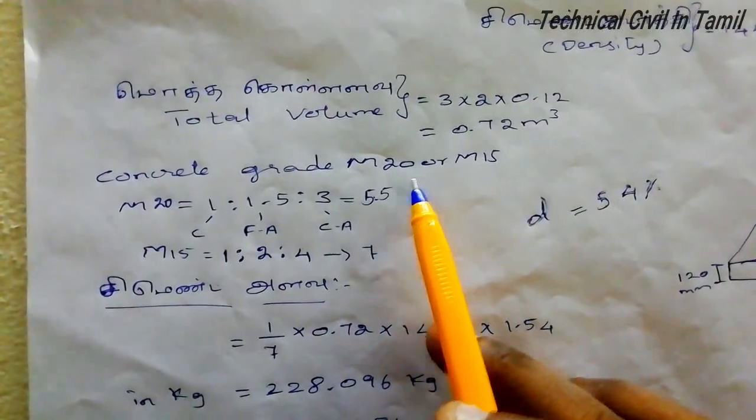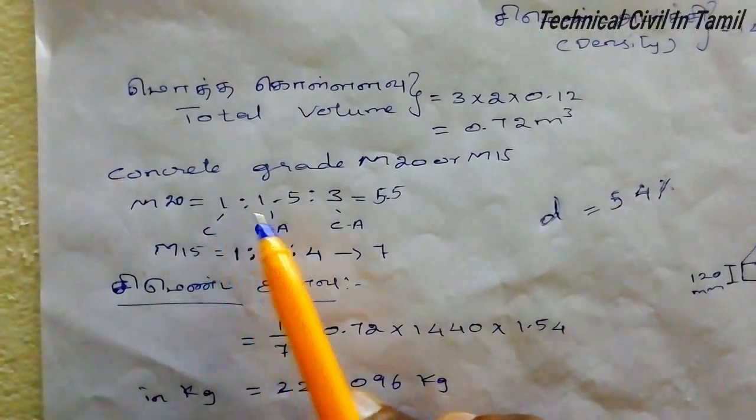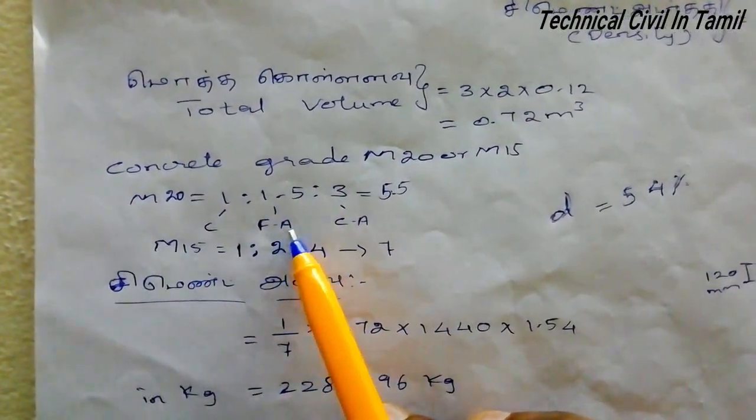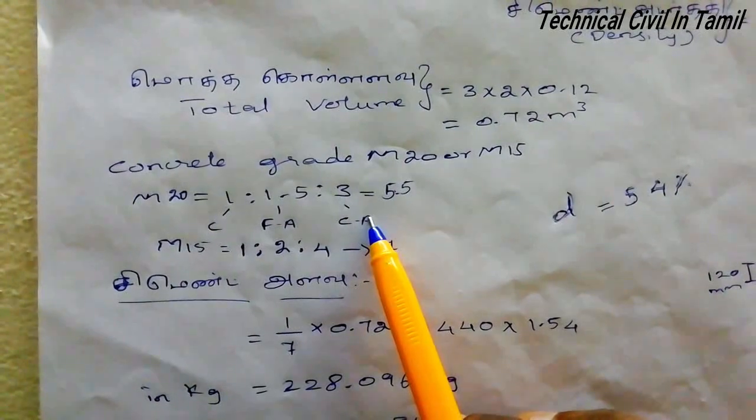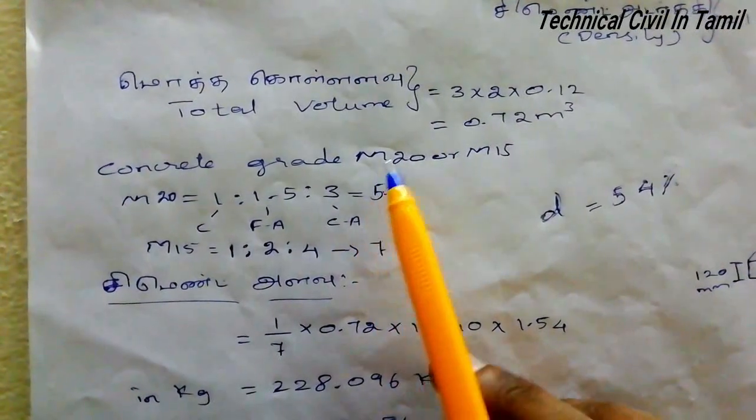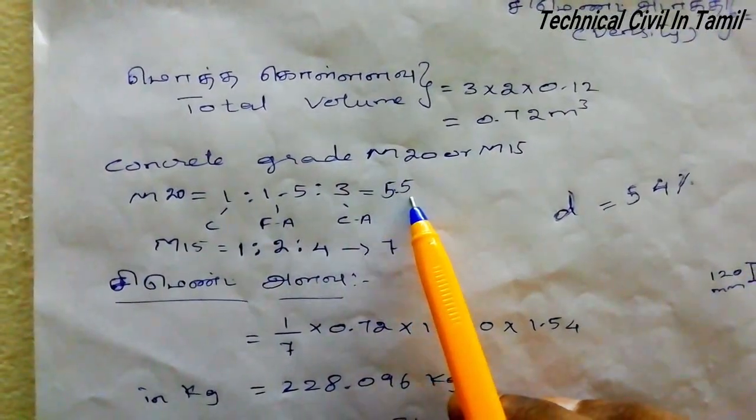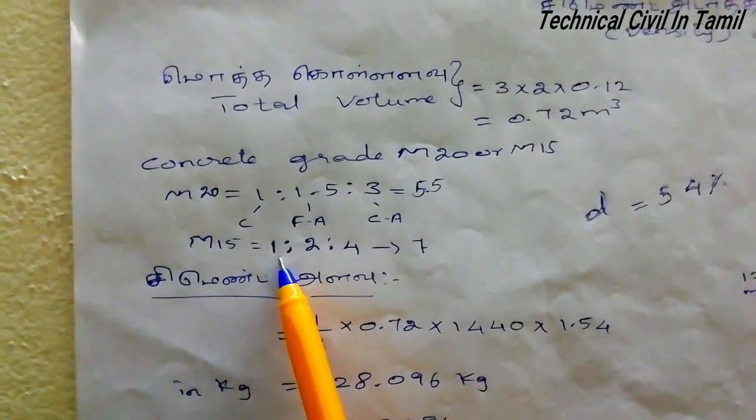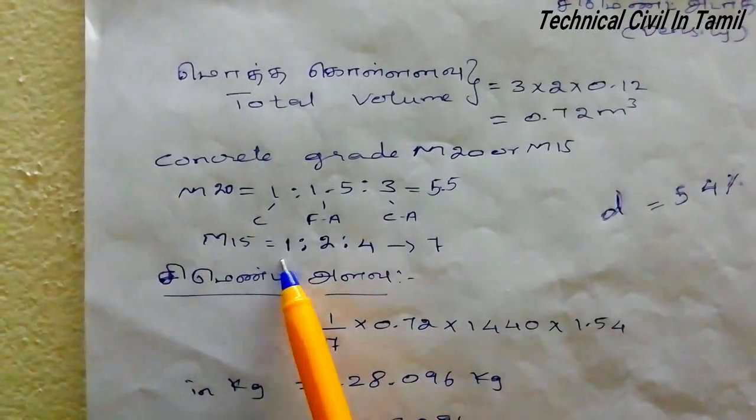The concrete grade is M20 or M15. The ratio is 1:1.5:3, which equals 5.5. The total is 5.5 parts.